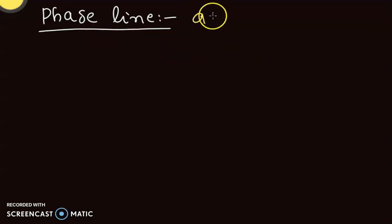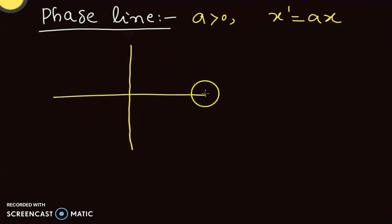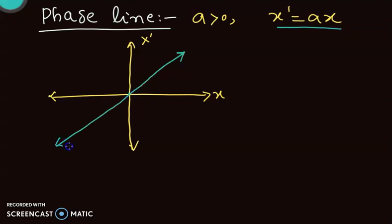Now consider a positive in our differential equation. Let's plot this differential equation on a diagram where we have coordinates x' and x. We already know that this is a line passing through 0 which we can plot. This is the line x' = ax. We can see that at x = 0 we have the equilibrium solution.